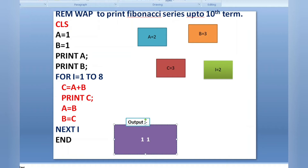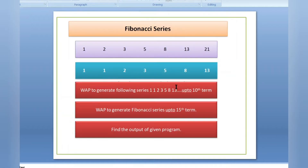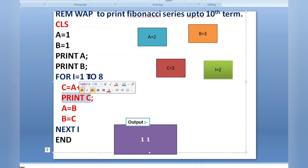So 1 and 1 are printed. The next number will be the addition of these last two numbers. Inside the for loop I am running from I equals 1 to 8 — the loop executes 8 times. Why 8? Because we already printed 2 times before the loop, and we need 10 terms total. Inside the loop I am printing only once.